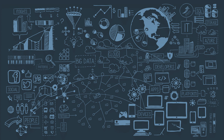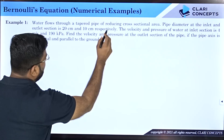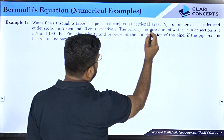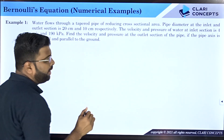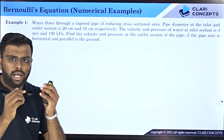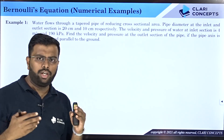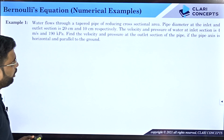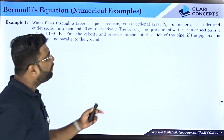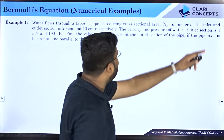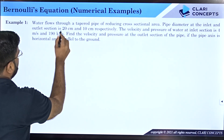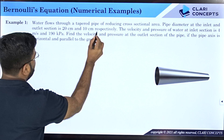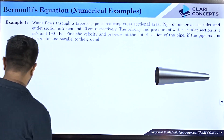The first example: water flows through a tapered pipe of reducing cross-sectional area. I have been given a tapered pipe and water is flowing through it. The pipe diameter at the inlet and outlet section is 20 centimeters and 10 centimeters respectively.